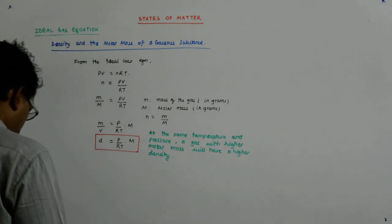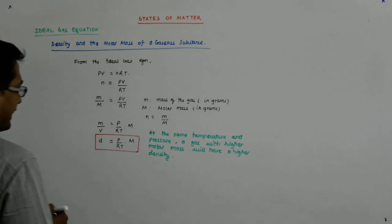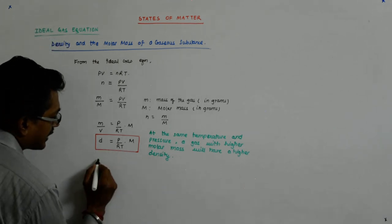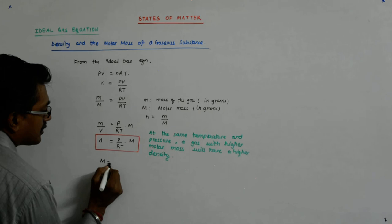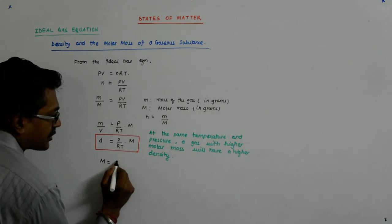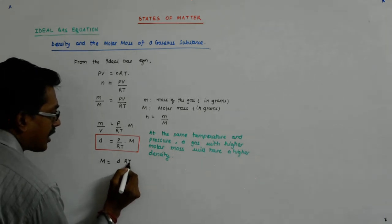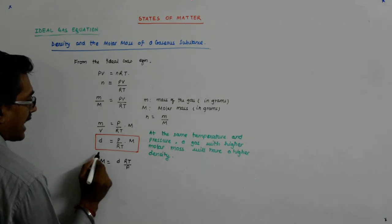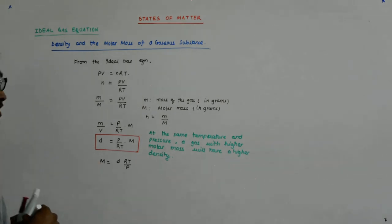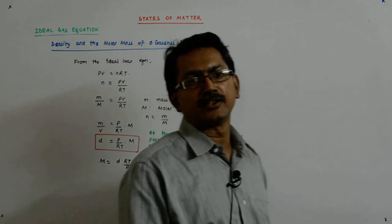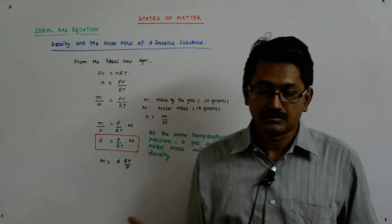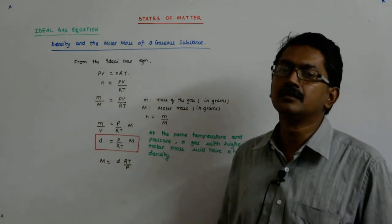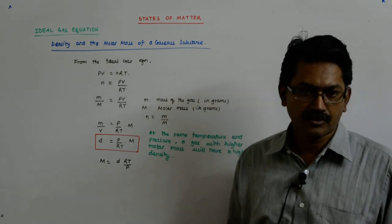This equation can also be used in this way: that if you know the density of the gas, so M is equal to dRT upon P, at a given temperature and pressure, if you know the density, then you will be able to calculate the molar mass of the gas.